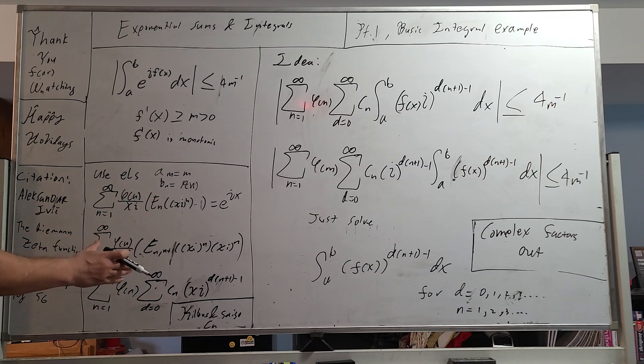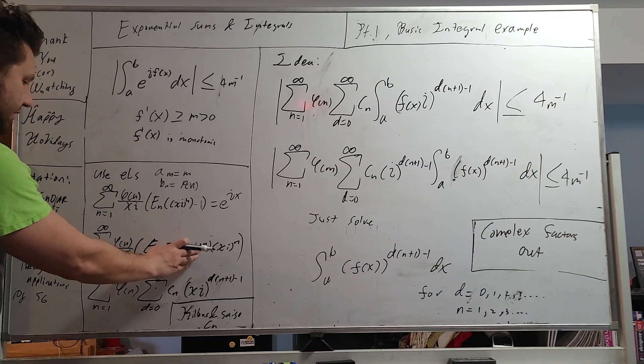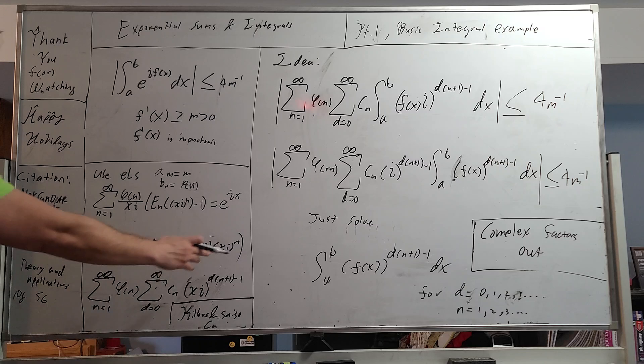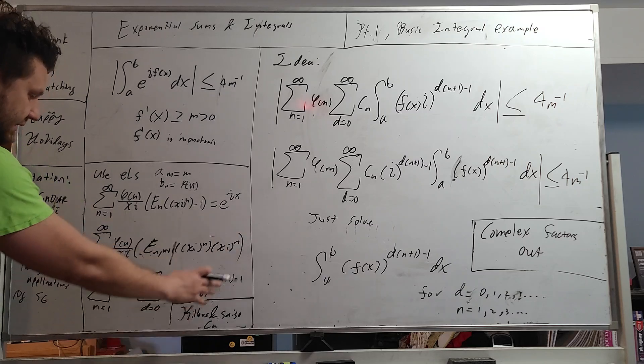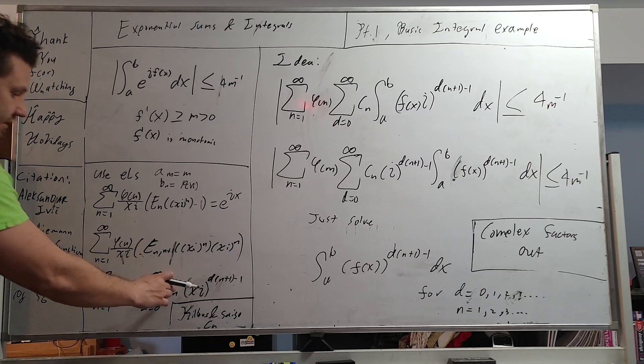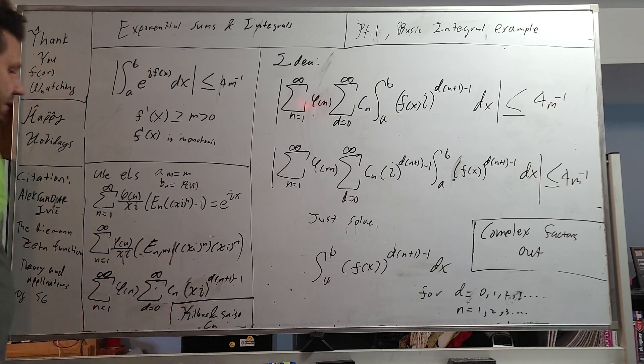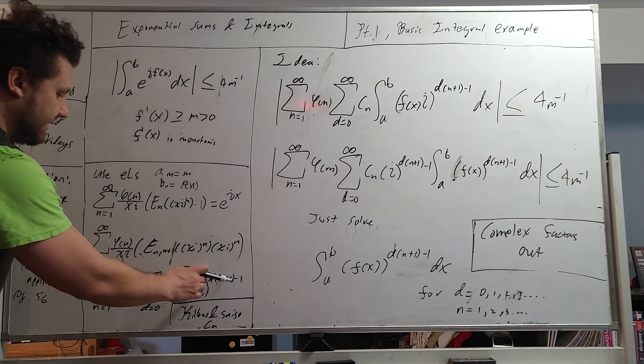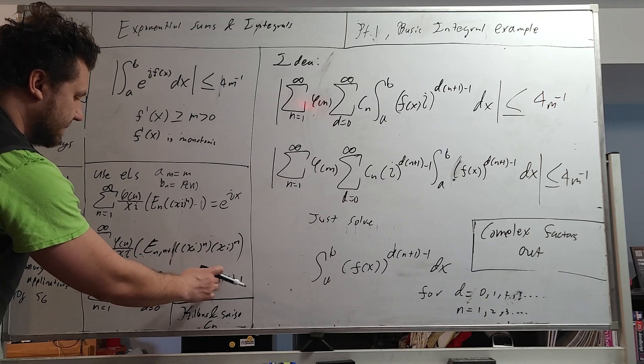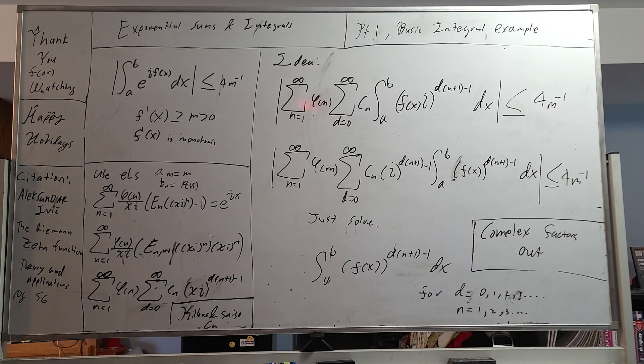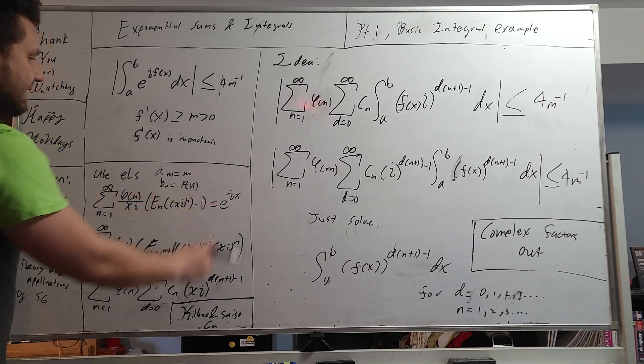Now, what's going to happen when we turn this into a pure generating function form? This x to the i n comes in, and we can isolate this x to the i and all of this right here. So this is very nice, right? D times n plus one, all minus one. Okay, so this is all equal to the e to the i x.